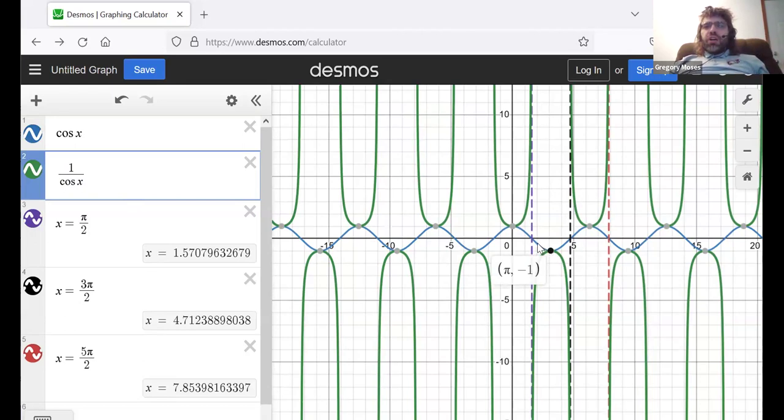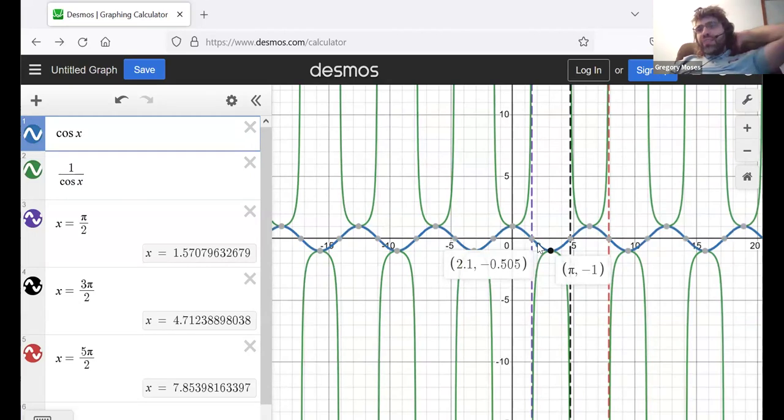Usually, though, the cosine is less than one. Like here, the cosine is about negative one-half. Now, one divided by a number less than one is greater than one.